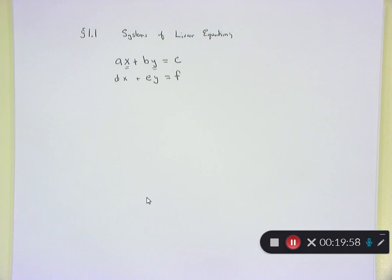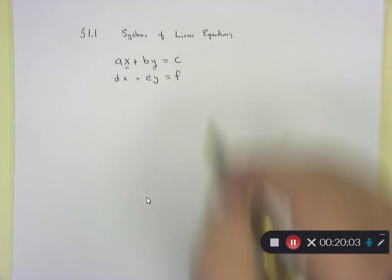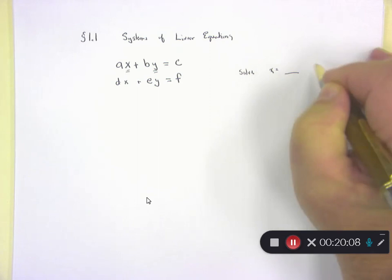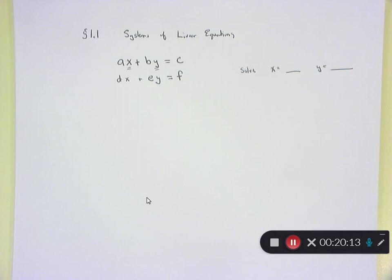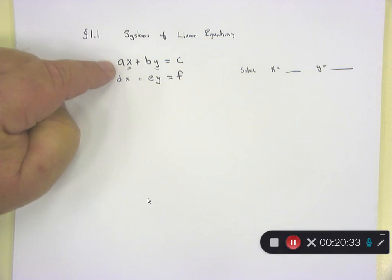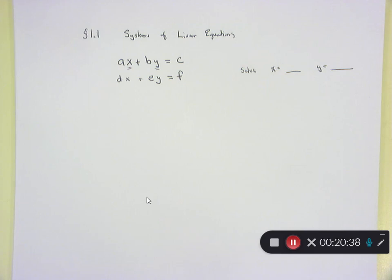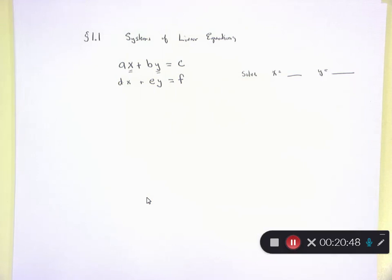The number of variables should at least match the number of equations if you have a chance of solving it. Solving a system of equations means figuring out what X equals and what Y equals. Because I have two variables, I can graph this. These are linear equations — AX plus BY equals C — you can solve for Y and get Y equals MX plus B. These are lines. So there are three scenarios for the answer.